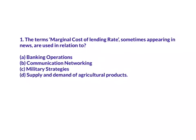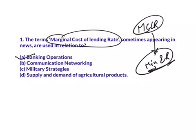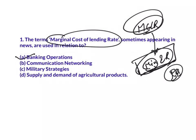Before starting today's session, let's see answers for questions from the previous video. The first question: the term 'Marginal Cost of Funds Based Lending Rate' (MCLR), which sometimes appears in news, is used in relation to which of the following? The answer is banking operations. MCLR is the minimum interest rate below which a bank cannot lend to its customers. There is an exception - if RBI allows banks to lend below this rate in some exceptional cases, they are permitted to do so, but generally banks cannot lend below this interest rate.